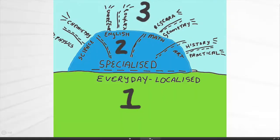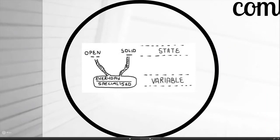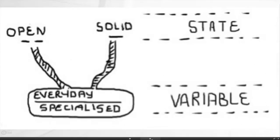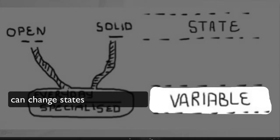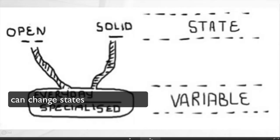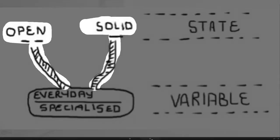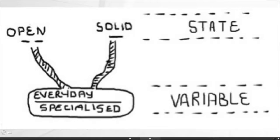Now I would like to show you a different way of conceptualizing this, and it's really important because it forms one of the basic logics of the book itself. To do that I want to start with the everyday-specialized relationship. I've called it a variable — something which can change — and it can change in one of two ways: it can either go into an open state or a solid state. So you have one variable and two states: open or solid.